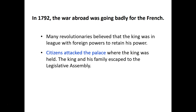In August of 1792, a crowd of Parisians stormed the palace. They slaughtered the guards of the king, and the royal family was able to escape to the legislative assembly. Remember, this is after the march to Versailles, when the king and queen and family were basically forced to march back to Paris — so they were basically prisoners in the palace.